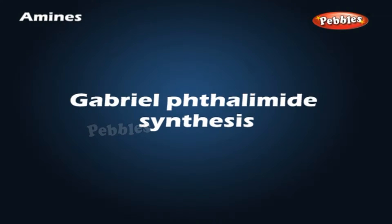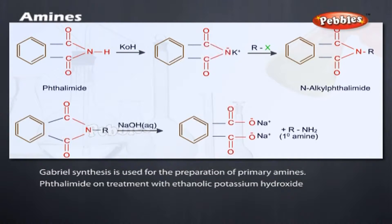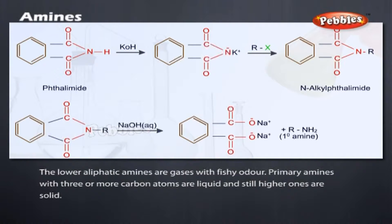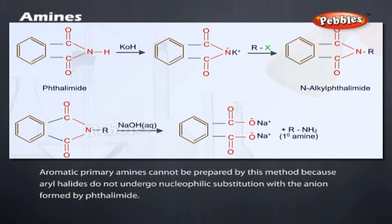Gabriel Phthalimide Synthesis: Gabriel Synthesis is used for the preparation of primary amines. Phthalimide on treatment with ethanolic potassium hydroxide forms potassium salt of phthalimide, which on heating with alkyl halide followed by alkaline hydrolysis produces the corresponding primary amine. Aromatic primary amines cannot be prepared by this method because aryl halides do not undergo nucleophilic substitution with the anion formed by phthalimide.